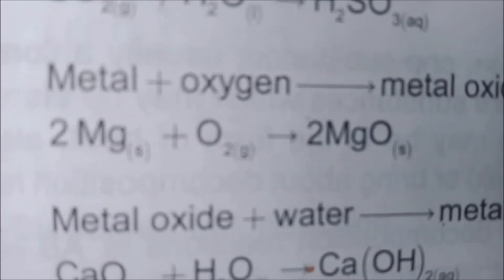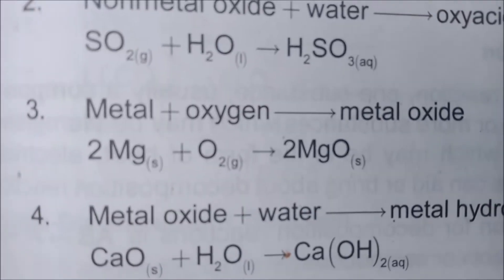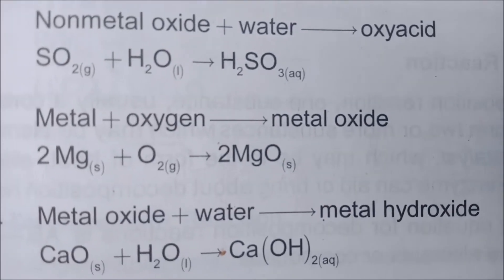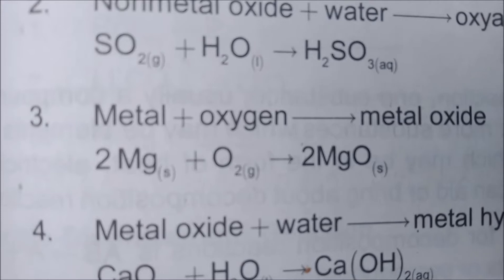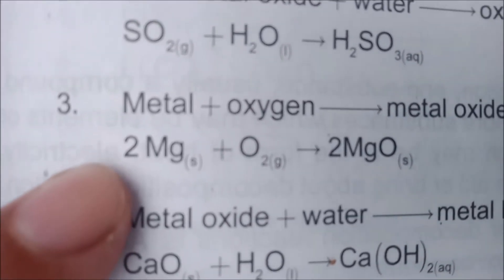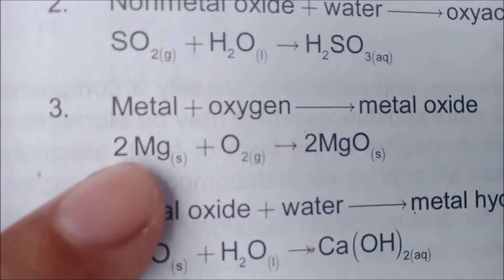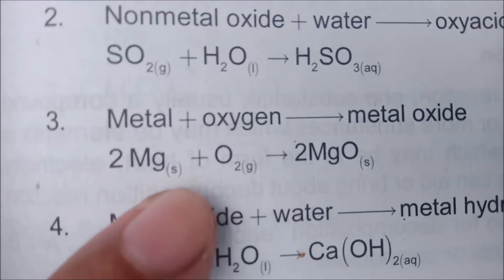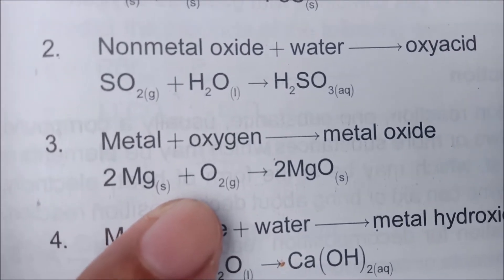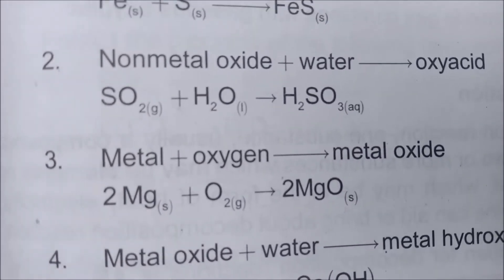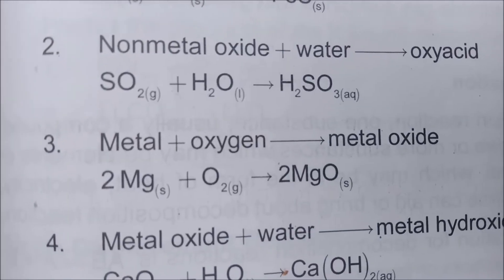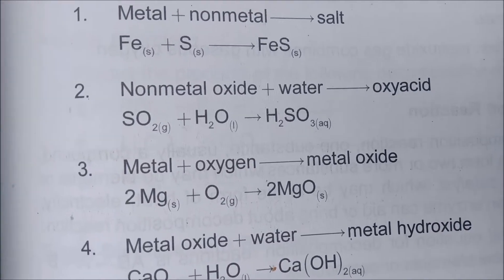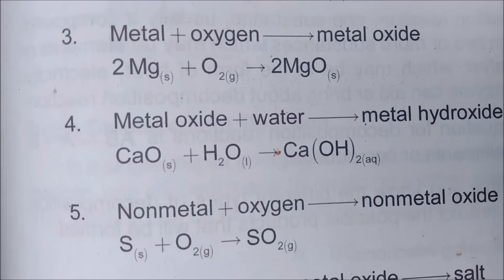This equation here is an example of a chemical equation wherein you have a metal added to an oxygen to form a metal oxide. You may see subscripts on the substances: (s) means the substance is a solid, (g) means it is a gaseous substance, (l) means the substance is liquid, and (aq) means the substance is aqueous.